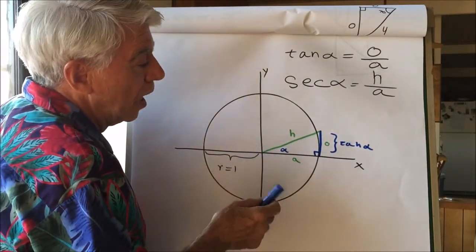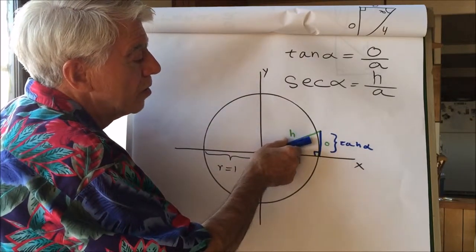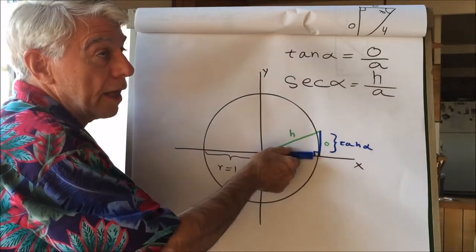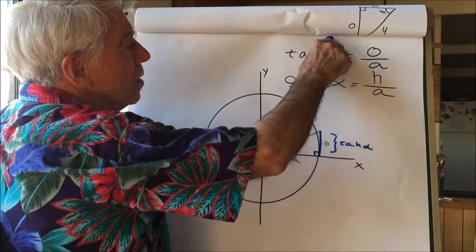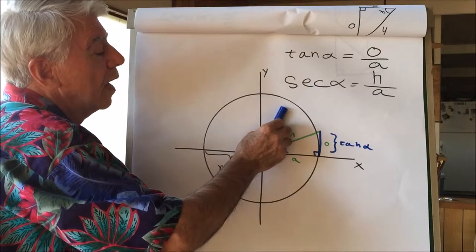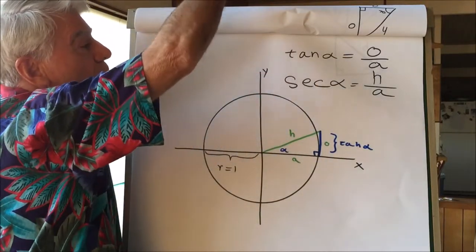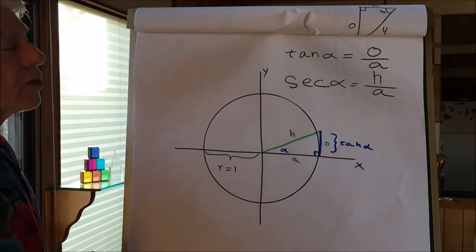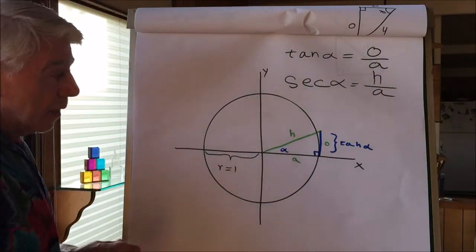Now we can see how the tangent relates to the angle. As the angle gets smaller, the tangent will get smaller and smaller and disappear — when the angle is 0, the tangent is 0. As this line gets longer and longer, the angle has to increase. In fact, when the angle reaches 90, no matter how far it goes, it will never intersect with the tangent. So at 90 degrees, the length of the tangent will be infinite.